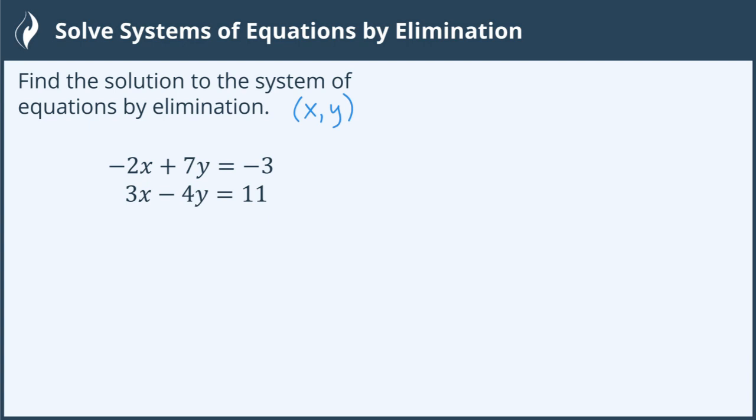So when I'm using elimination, my goal is to add the two equations together and eliminate one of the variables. Right now, if I were to add them together, neither one of the variables x nor y would eliminate. So I need to do a little bit of transformation.